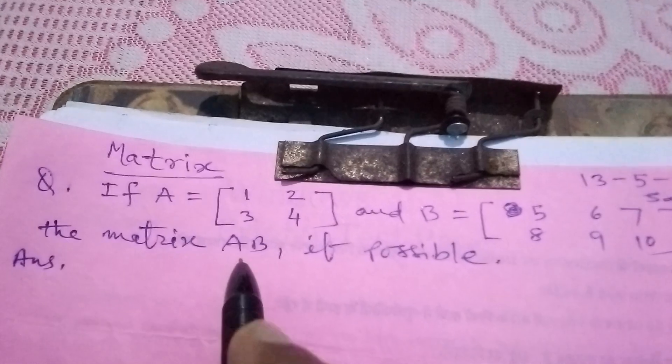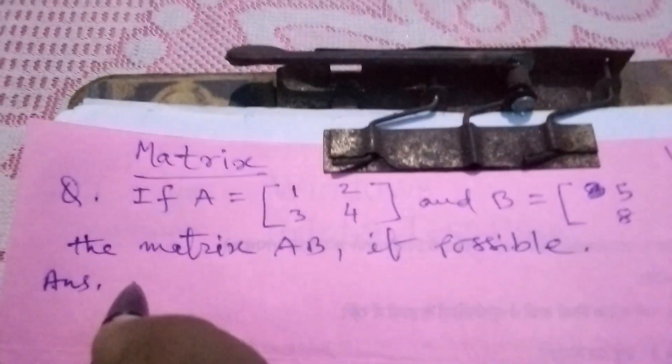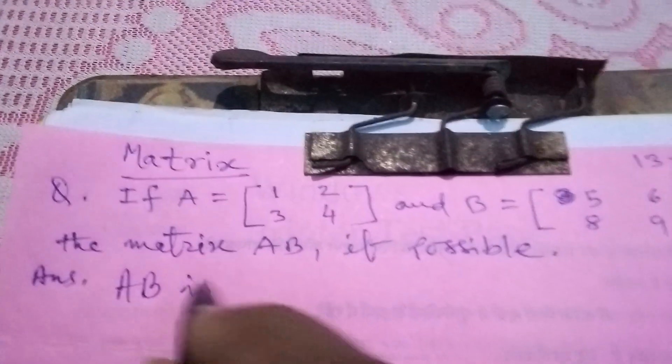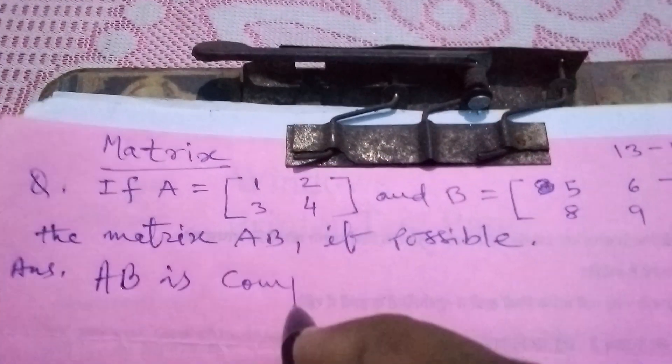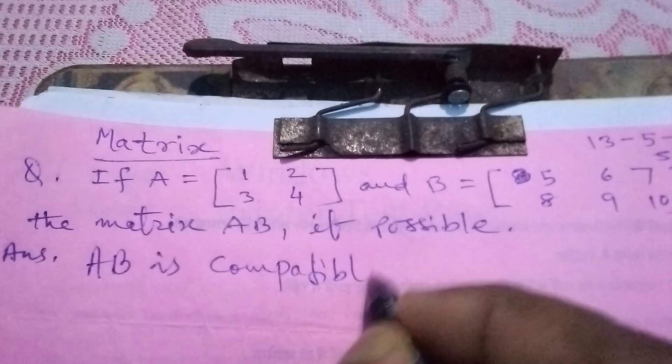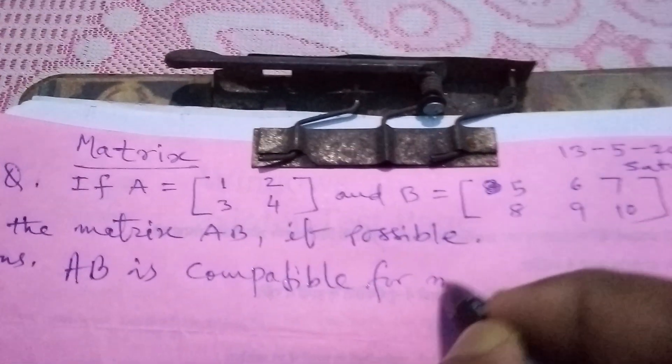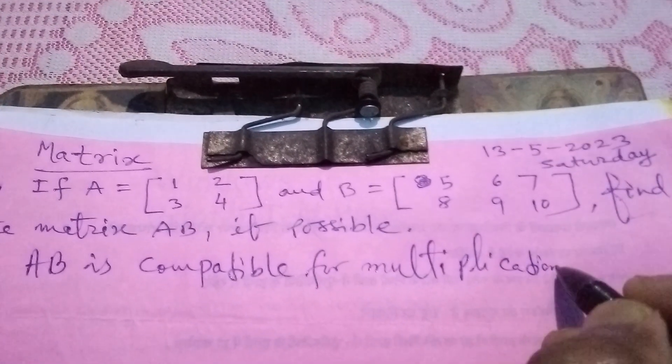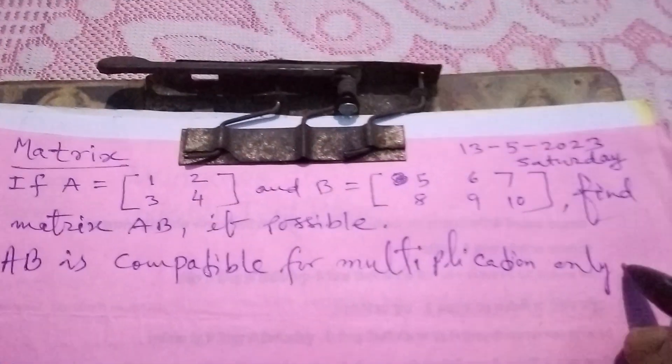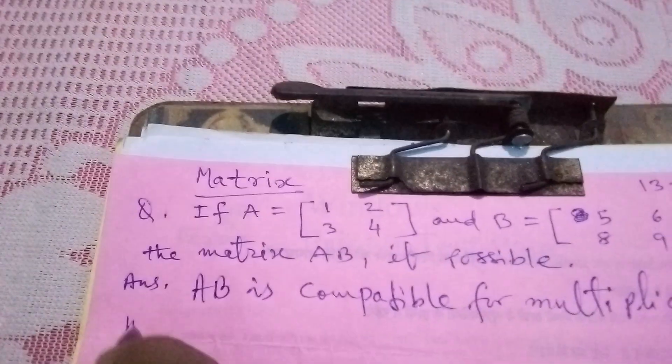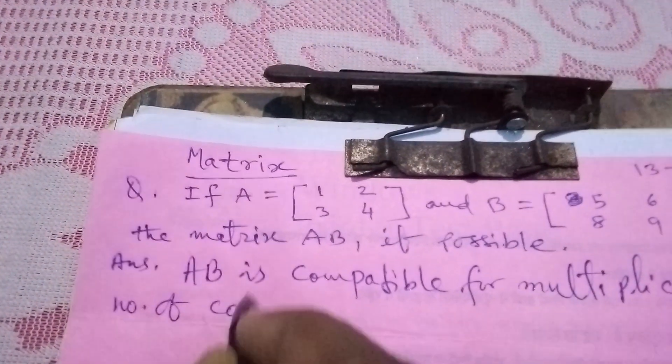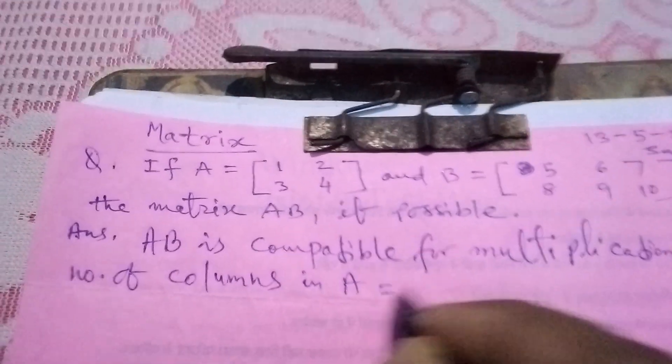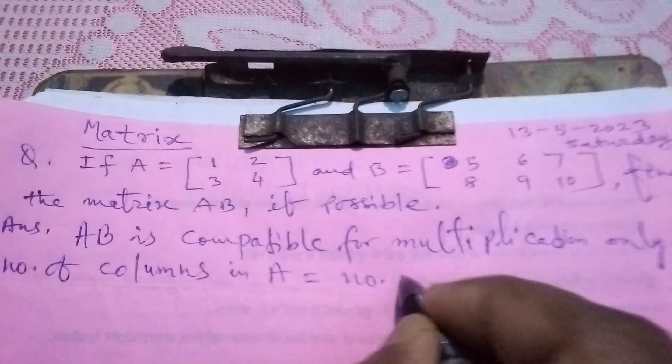We have to find the matrix AB if possible. So first of all, AB is compatible for multiplication only if number of columns in A equals to number of rows in B.